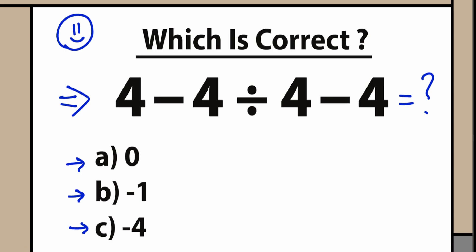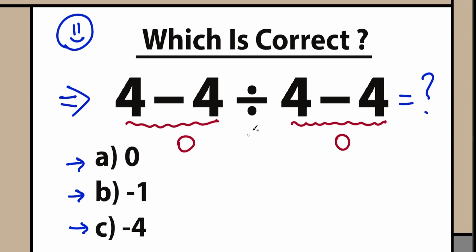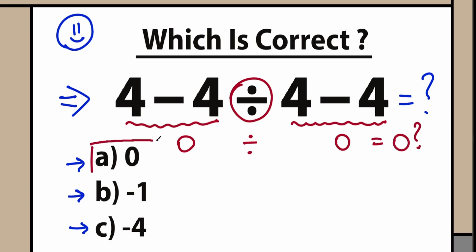Here's our question. A lot of students might say: okay, we have 4 minus 4 right here, so this is equal to 0. We have 4 minus 4 on the right side equal to 0 as well. So with this division in the middle, we're going to divide the left side by the right side — 0 divided by 0. A lot of students say that 0 is the correct answer, which is option A.